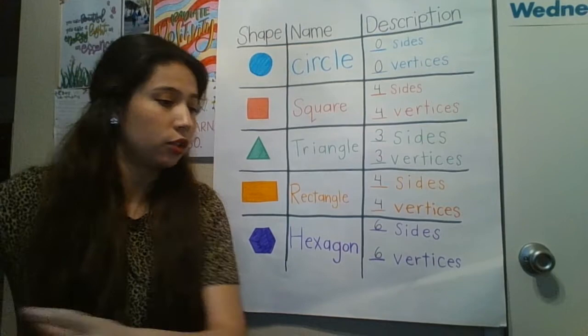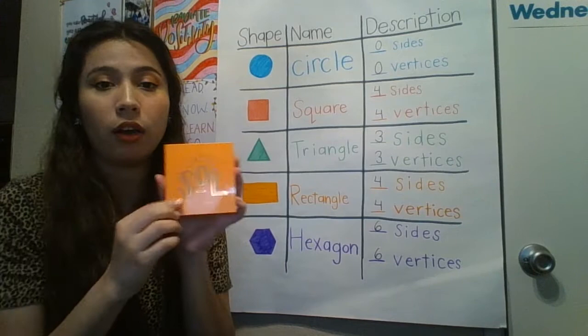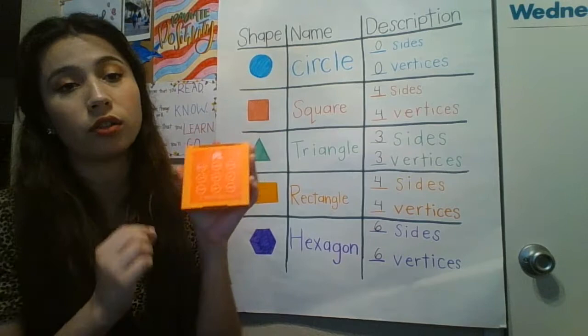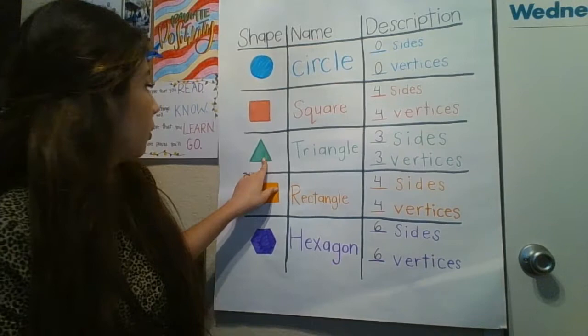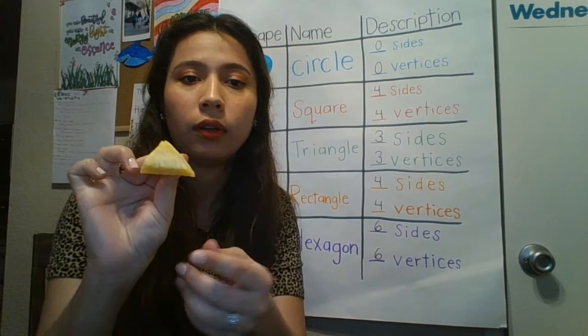For a square, I found this little makeup palette. When I close it, it is a perfect square — I know it's a square because it has all equal sides. The next shape is a triangle. I had such a hard time finding something that was a triangle. The only thing I could find — I was eating pineapple today, and look at the way it's cut up: it's cut in a triangle shape. It has three sides and three vertices. That's the only triangle I could find.